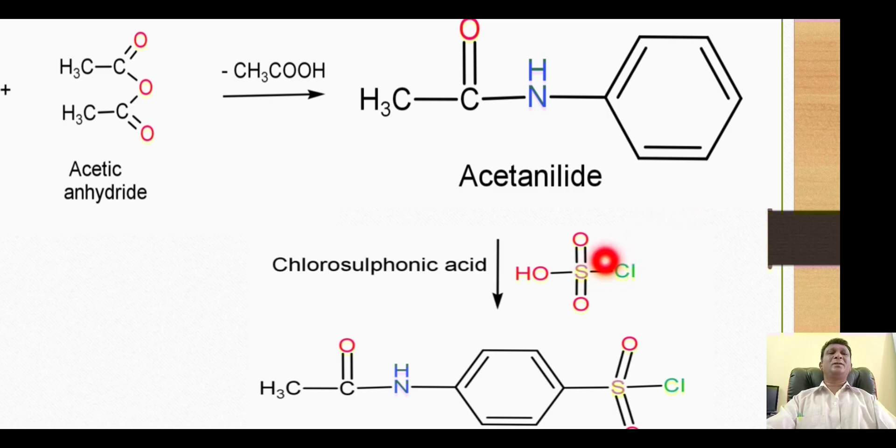For the sake of electrons, this sulfur attacks the benzene ring, which is the source of pi electrons. When this sulfur attacks at the para position, the hydrogen of this para position goes to the hydroxy group to make a water molecule, which is liberated.